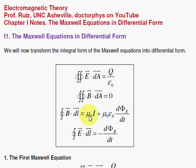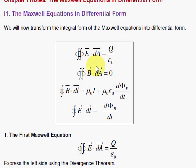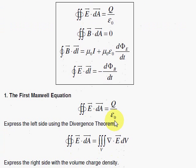It's time to derive the Maxwell equations in differential form from their integral form. We're going to take the first one, Gauss's Law, and use the divergence theorem to arrive at a differential equation.